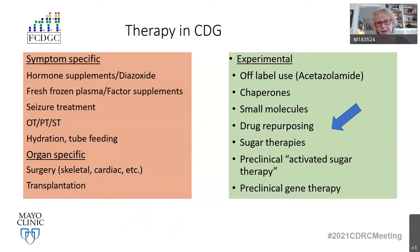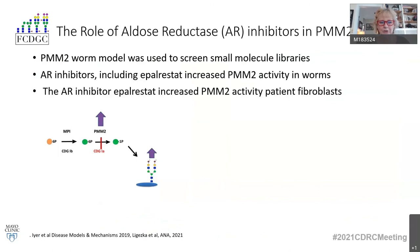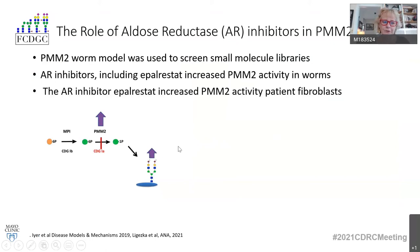I would like to switch now to drug repurposing, as that's our main topic in this discussion. I want to show you a promising new therapeutic approach we are working on in PMM2-CDG, the most common type of CDG. In a worm model of this disease, small molecule library screening showed that aldose reductase inhibitors — a group of molecules used in the treatment of diabetic neuropathy — appeared to increase the PMM2 enzyme activity in genetically defective worms.